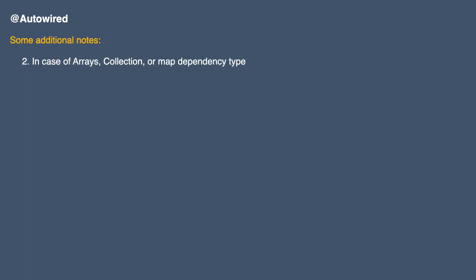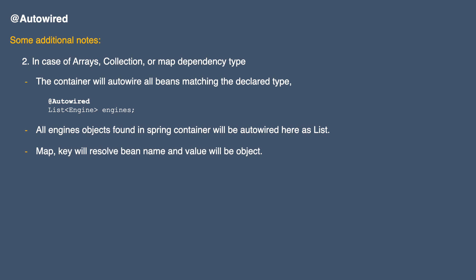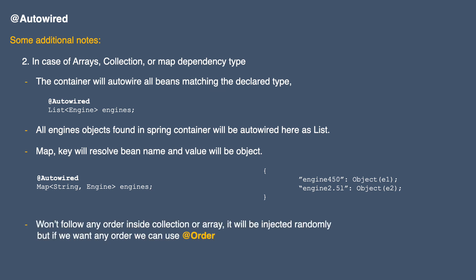In the case of an array, collection, or map dependency type, the container will autowire all beans that match the declared type. For example, with a List of Engine, all Engine objects found in the Spring container will be autowired as a list. In the case of a map, the key will be the name of the object and the value will be the object itself — so a Map<String, Engine> will be populated accordingly after dependency injection. There is no guaranteed order inside these collections or arrays, but if you want a particular order you can use the @Order annotation. Additionally, there is another annotation we can use in combination with autowire — the @Qualifier annotation.